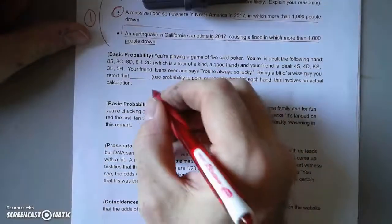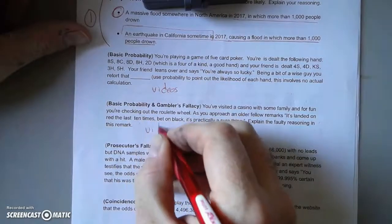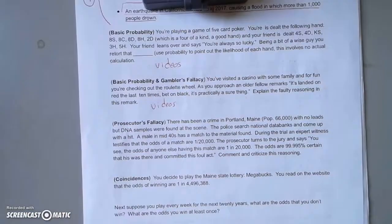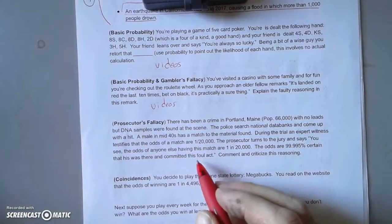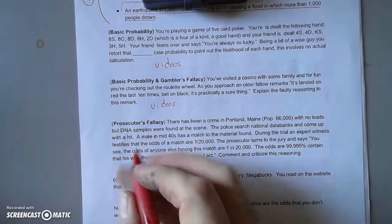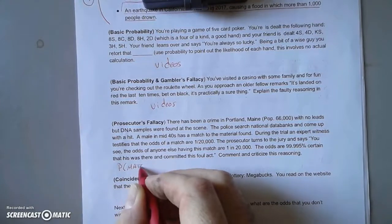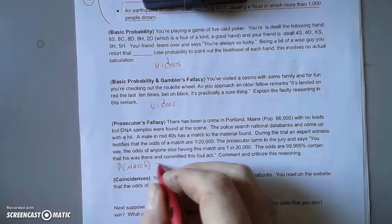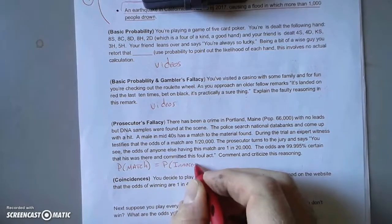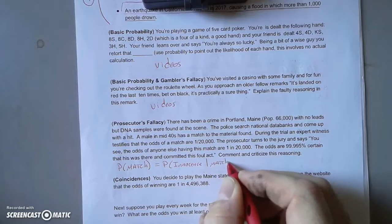I'm going to refer you to other videos for these, and especially just jump to the prosecutor's fallacy. The prosecutor's fallacy, in a nutshell, is equating the probability of a match with the probability of innocence given a match.